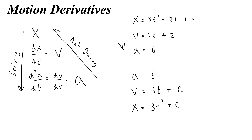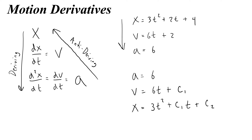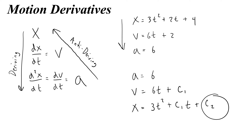So c1 is some constant — maybe 2, 3, or 4 — and I'd put a c1 times t term there, plus a second constant of integration. If I started with 6 and antiderived, the difference is that I don't actually know what this constant of integration is going to be. And when I antiderive again, I don't know what the second constant of integration is going to be.